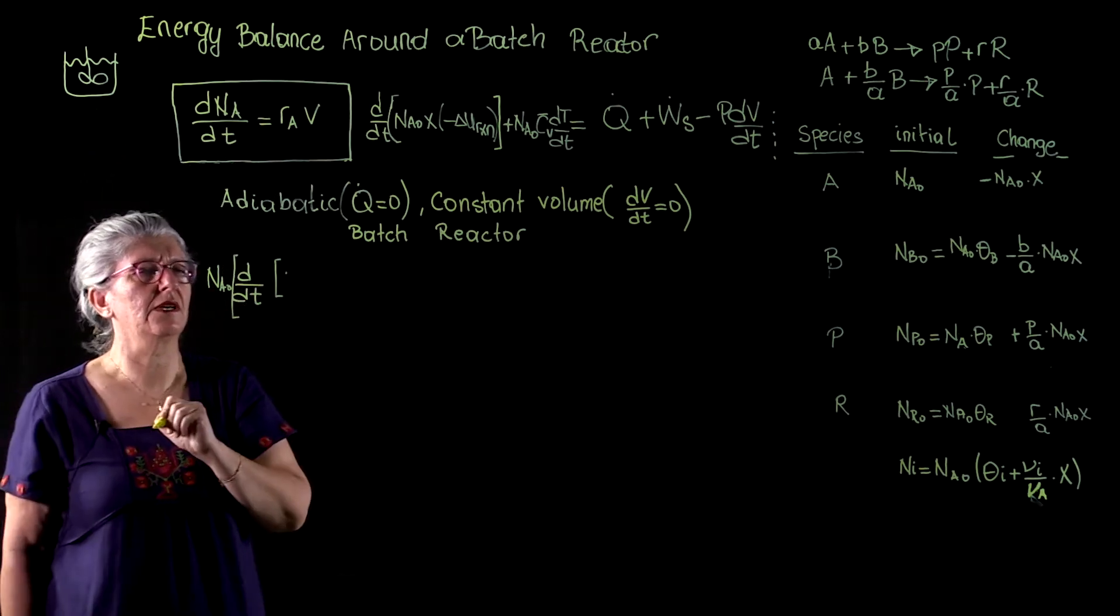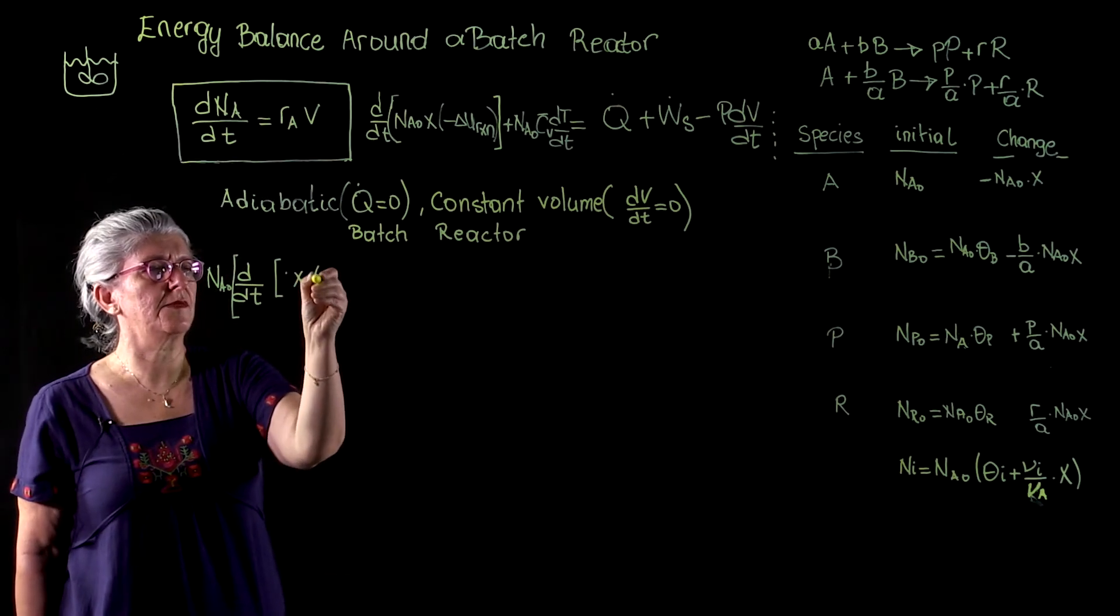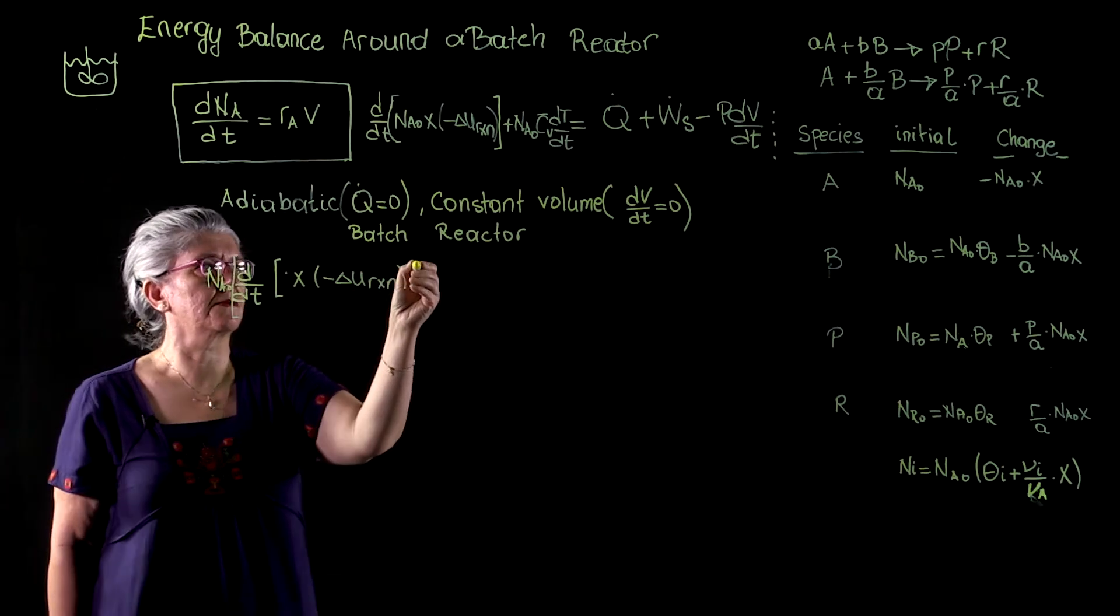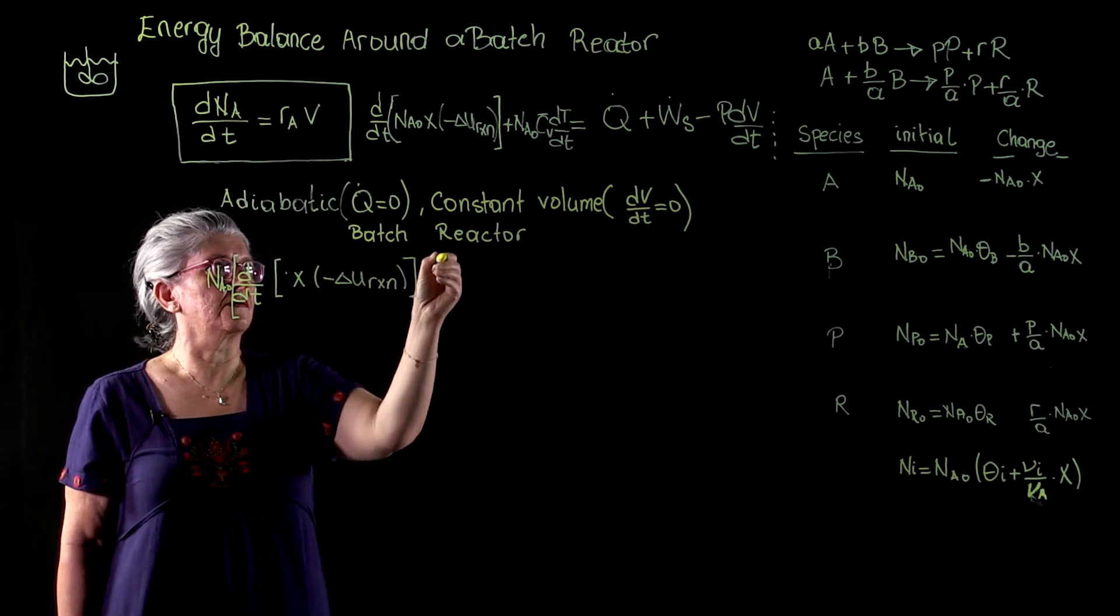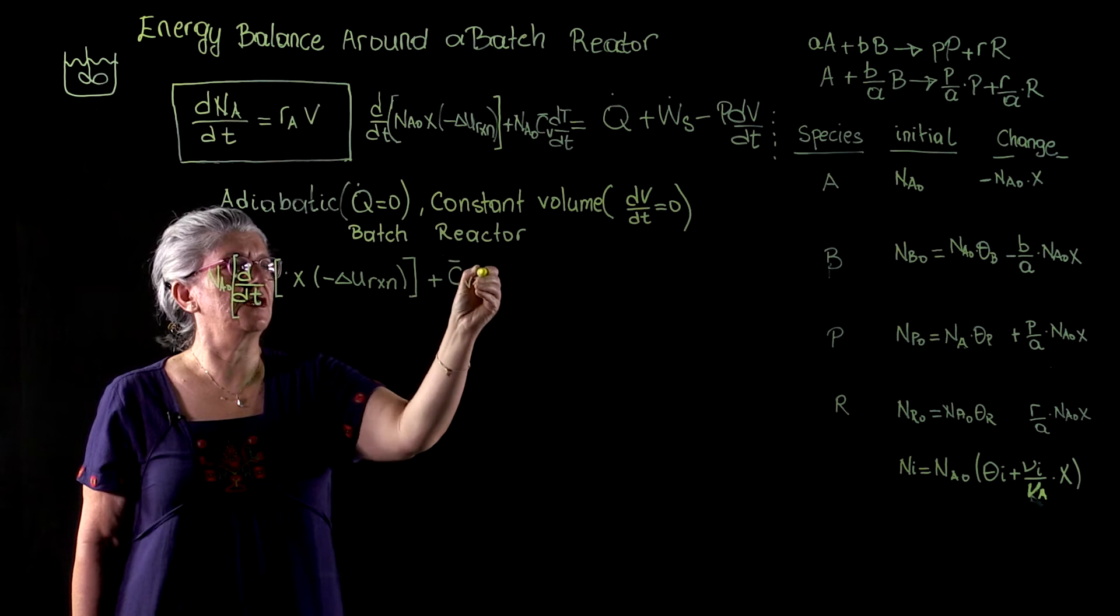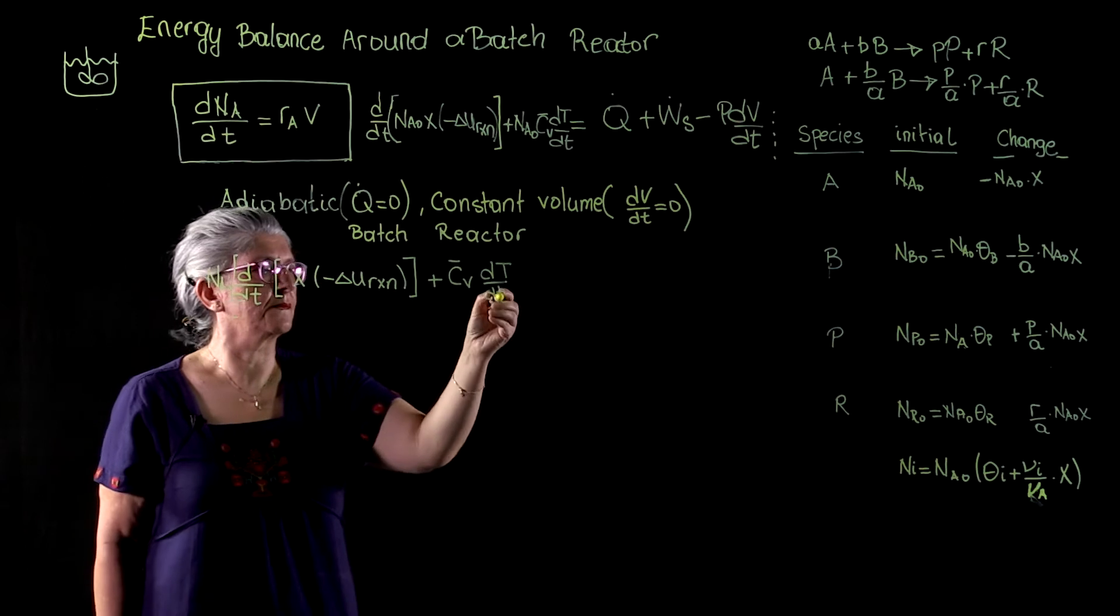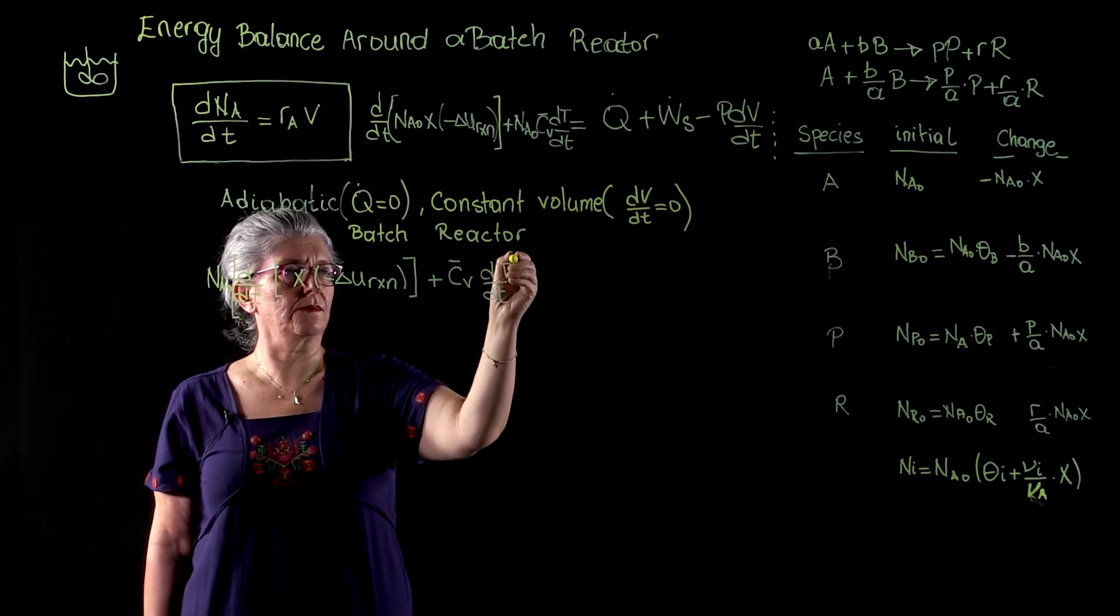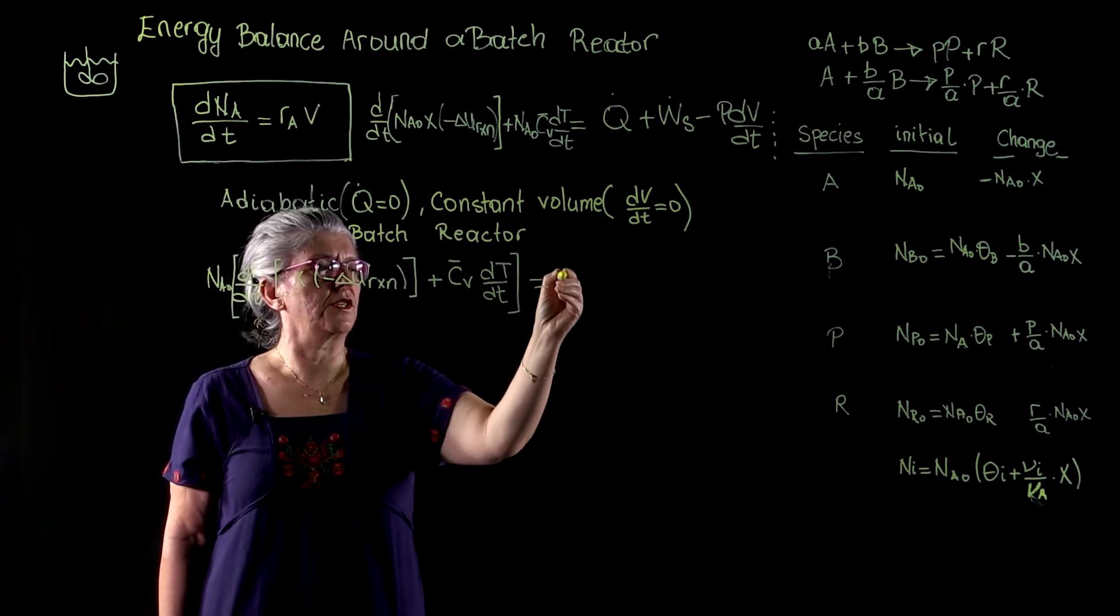Take a big frame. X times minus delta u reaction plus cv average dt over dt is equal to shaft work.